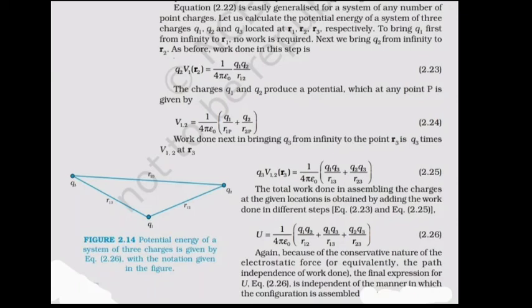Work done in bringing q3 from infinity to r3 is q3 × V12 at r3, which equals k[q1·q3/r13 + q2·q3/r23]. The total potential energy is U = U12 + U13 + U23 = (1/4πε₀)[q1·q2/r12 + q1·q3/r13 + q2·q3/r23].